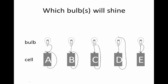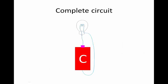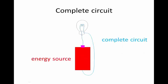Which of these bulbs will shine and why? C will shine because we have a complete circuit. In C we have the two requirements for current to flow.